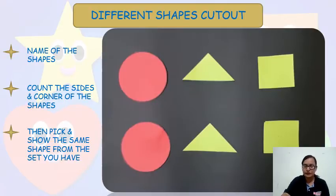One you have to keep with yourself and one you have to give to the child. You have to ask the child to show you shapes one by one. When the child is showing you those shapes, you have to ask him or her questions like name of the shapes, count the sides of the shapes, corners of the shape.